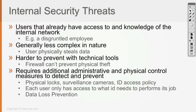For internal security threats, additional administrative and physical control measures are required to detect and prevent them. These are non-technical tools: physical locks to prevent devices from being stolen, and surveillance cameras to detect movement in restricted areas or at restricted time intervals. For example, you wouldn't want someone in the data center at 3am unless there was authorized network configuration or migration work. If a camera detects movement at 3am in the data center, that clearly shouldn't happen and action should be taken.